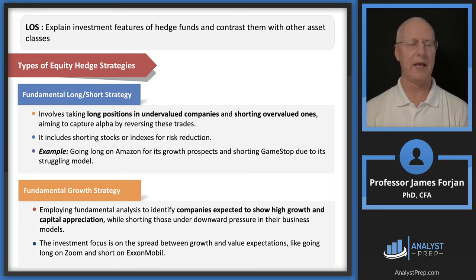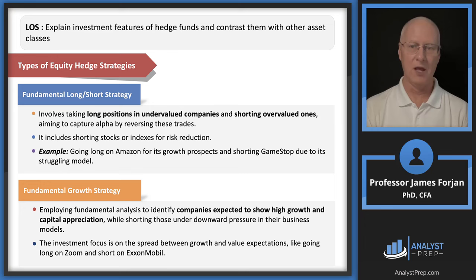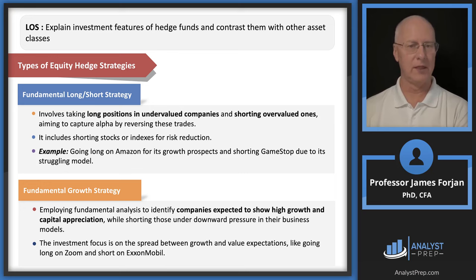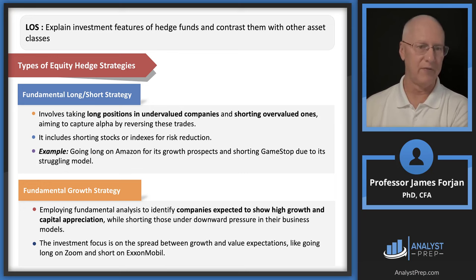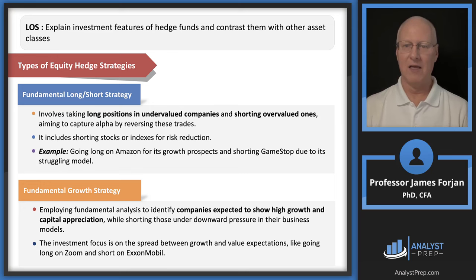The fundamental long-short strategy is what A.W. Jones employed. You do bottom-up research and find five companies — say four are undervalued and one is overvalued. In the old days you'd just take the long position in the four and ignore the fifth. But now, taking a short position lets you benefit on both sides. The first bullet point: aiming to capture alpha when you reverse those trades — when the long position appreciates and the short position depreciates.